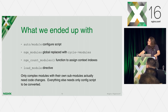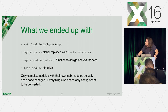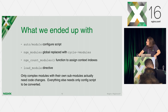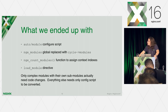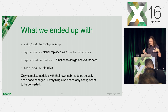So what we ended up with: the after_module configure script, the Nginx module global replaced with cycle modules, a count_modules function to assign context indexes for complex modules, and the load_module directive. All previous modules continue to work fine.